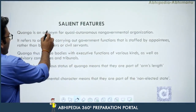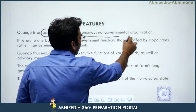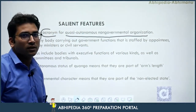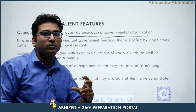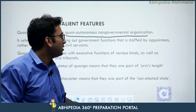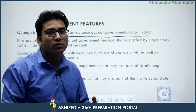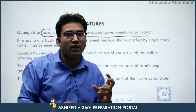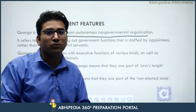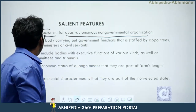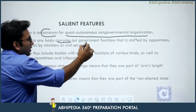QUANGO is an acronym for Quasi Autonomous Non-Governmental Organizations. They are somewhat quasi-judicial non-governmental organizations — NGOs which have some sort of association with judicial institutions. It also refers to any body carrying out government functions.